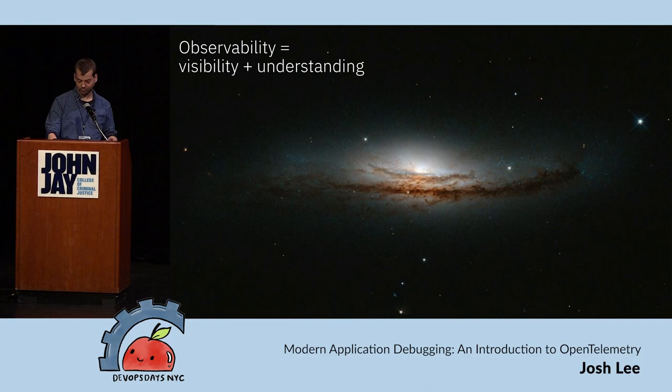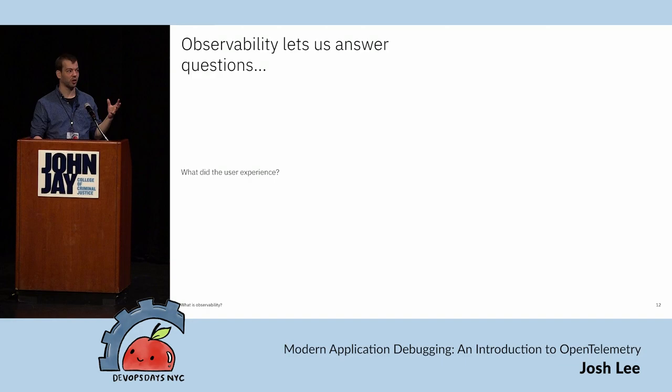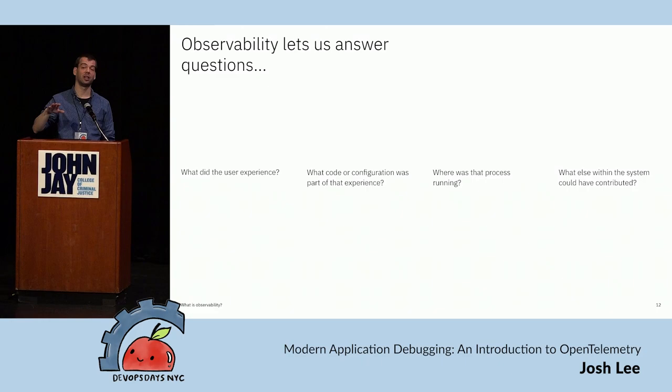When I talk about observability today, I'm not talking about those three signals. I really just mean: can we understand what we're looking at? Can we look at something and understand why it's doing what it's doing? That lets us answer questions like: what did the user experience, what was the latency of their experience, what error messages might they have seen? We're starting from a user-centric point of view and then tying that back to what my team did, what I have responsibility for that contributed to that experience, and what infrastructure it might be running on.